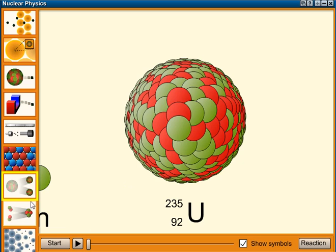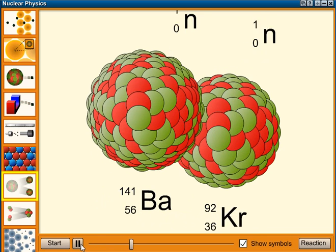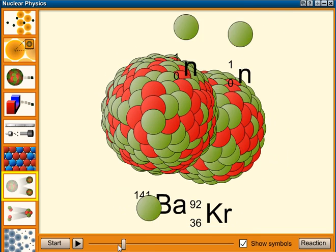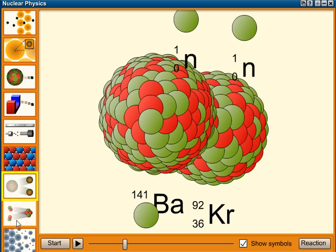Here we have some nuclear fission. If I press play, in comes a neutron. It hits the uranium-235, and it's splitting it into two smaller nuclei. And if I just go back there, it throws out a couple of neutrons as well.